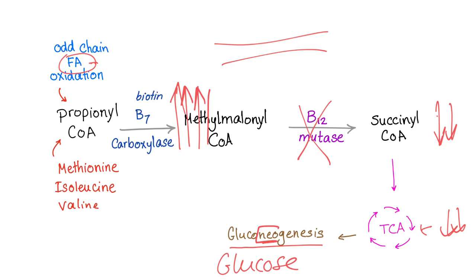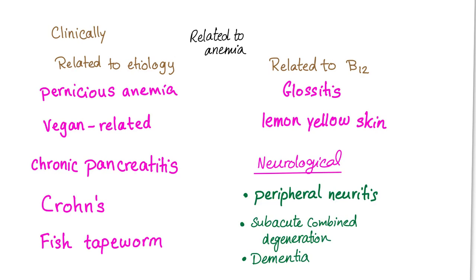So now the myelin sheath cannot be formed, leading to demyelination in the spinal cord, the peripheral nerves, as well as the brain. Okay, what are the clinical signs and symptoms?